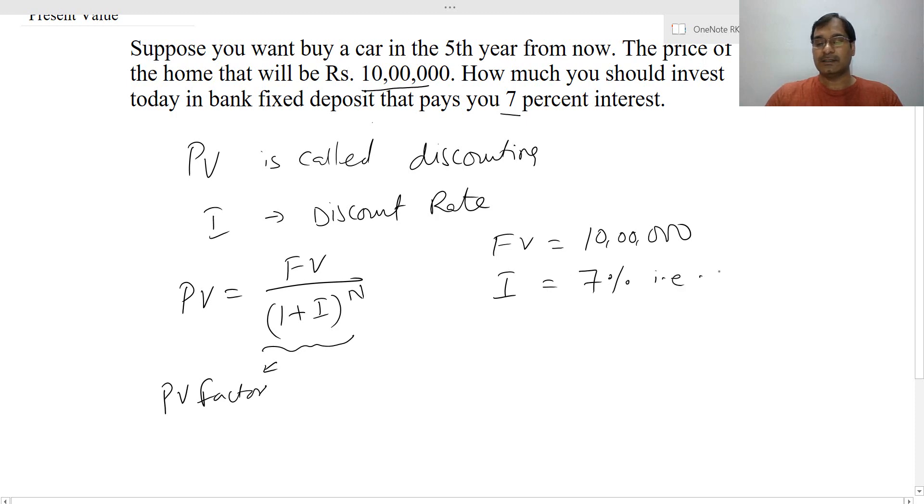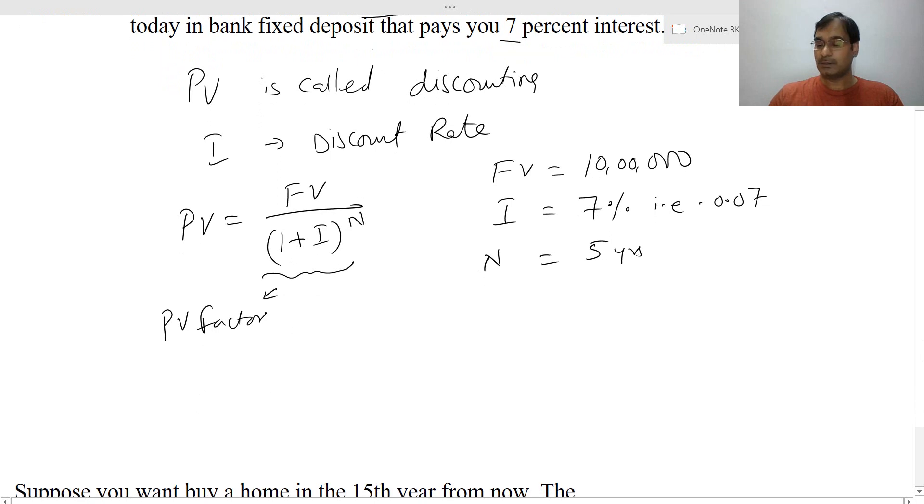So your present value equals to 10 lakhs divided by (1 + 0.07)^5. This equals to 10 lakhs divided by 1.4026.